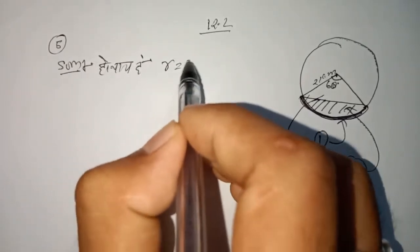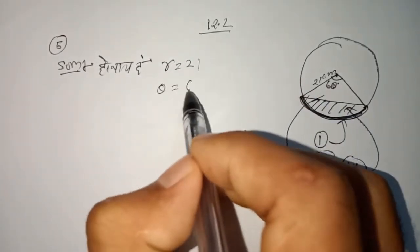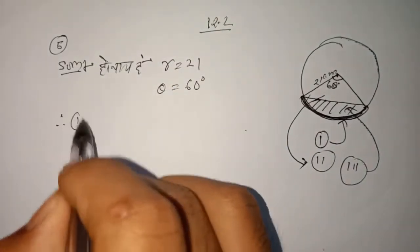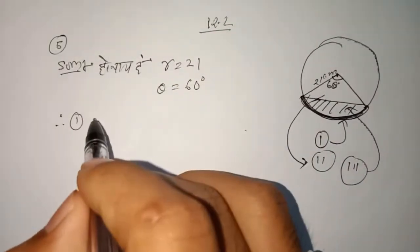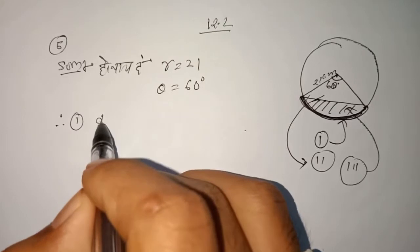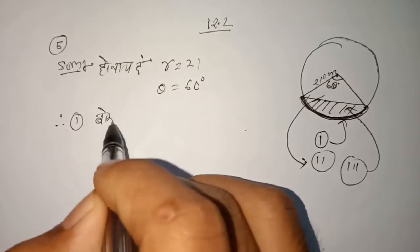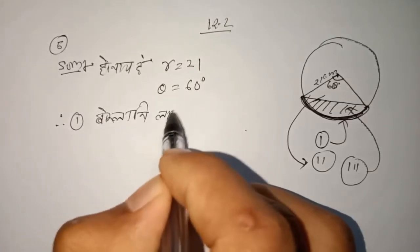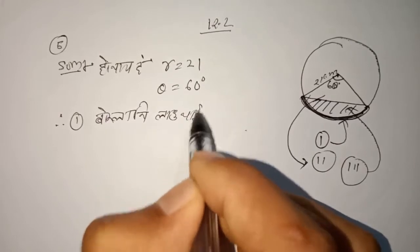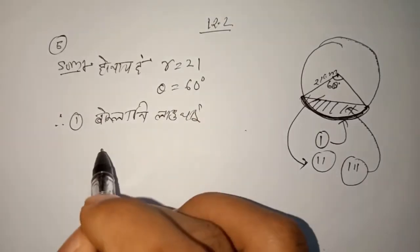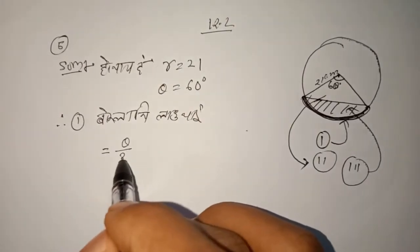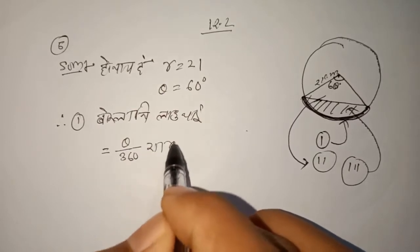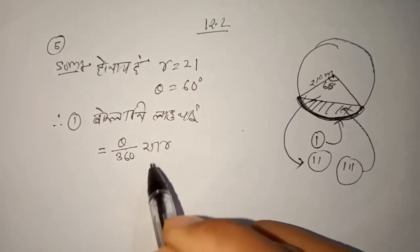The solution: R equals 21, theta equals 60 degrees. Therefore, we use the arc length formula: theta divided by 360, times 2πr. This is the formula.